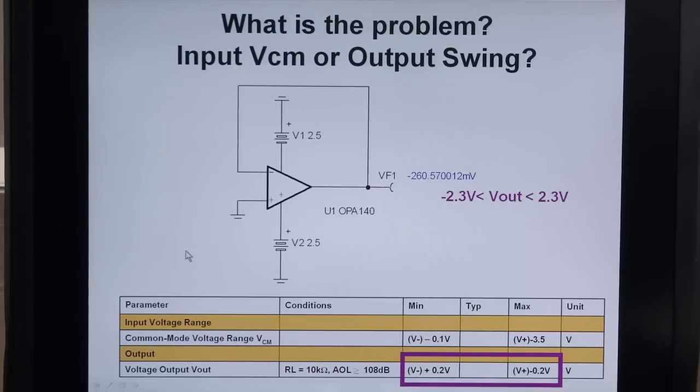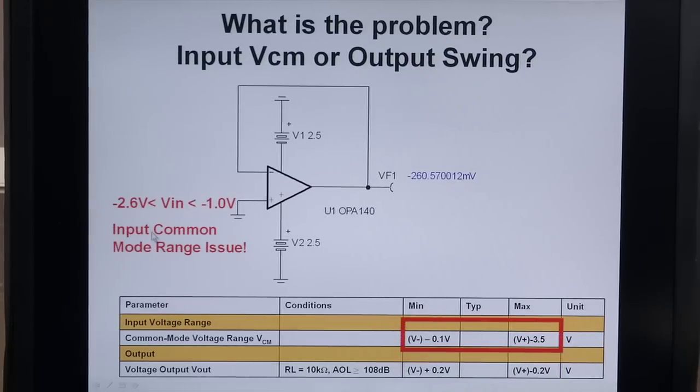Let's look at another example starting with the output. We have the output range with different supplies plus or minus 2.5 volt supplies, we have plus or minus 2.3 volt limits. No problem here because the output wants to be zero volts, it's not outside of this range. What about the input? Well with the input we have a zero volt input and if we look at the plus or minus 2.5 volt supplies, the range of the input is minus 2.6 to minus 1 and zero is outside of that range so it's a violation that's why we have hundreds of millivolts out instead of microvolts.